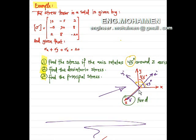The z-axis will be fixed and x and y will be rotating by 45 degrees, so the angle between x and x-prime will be 45 degrees, and between y and y-prime will also be 45 degrees.